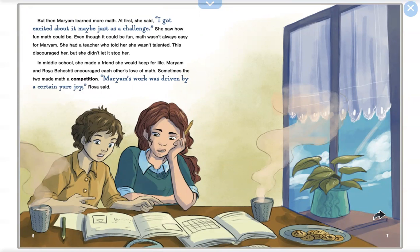She had a teacher who told her she wasn't talented. This discouraged her, but she didn't let it stop her. In middle school, she made a friend she would keep for life. Maryam and Roya Beheshti encouraged each other's love of math.